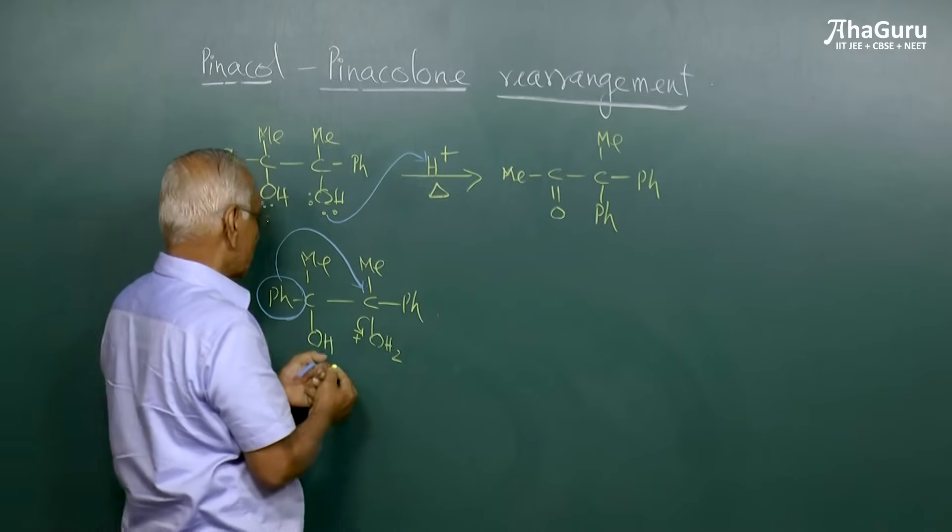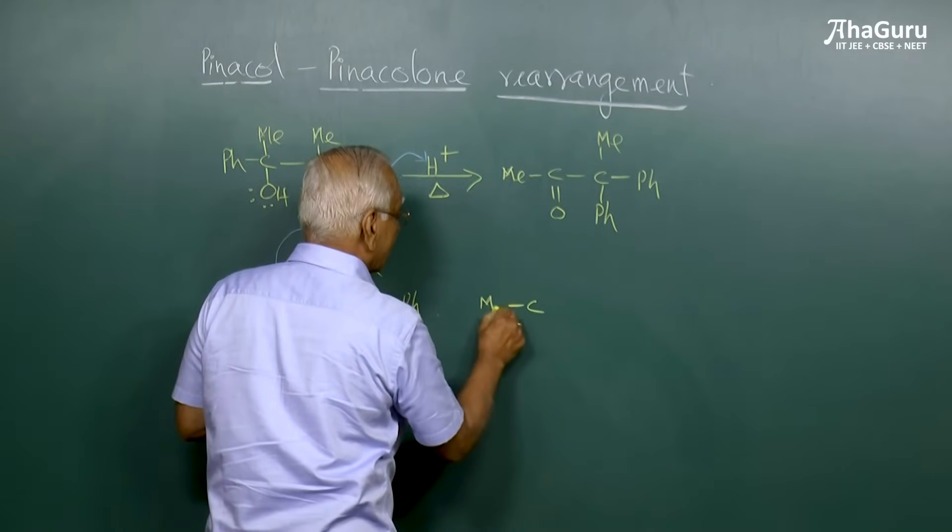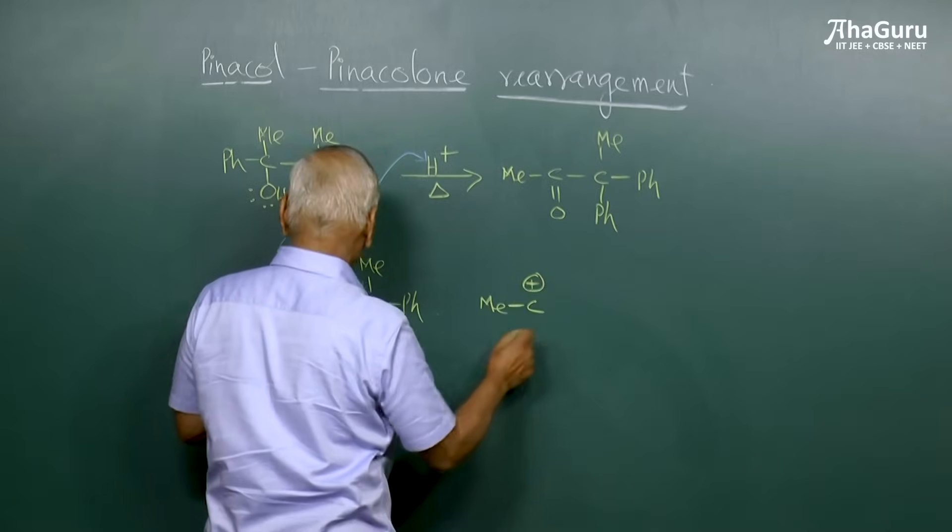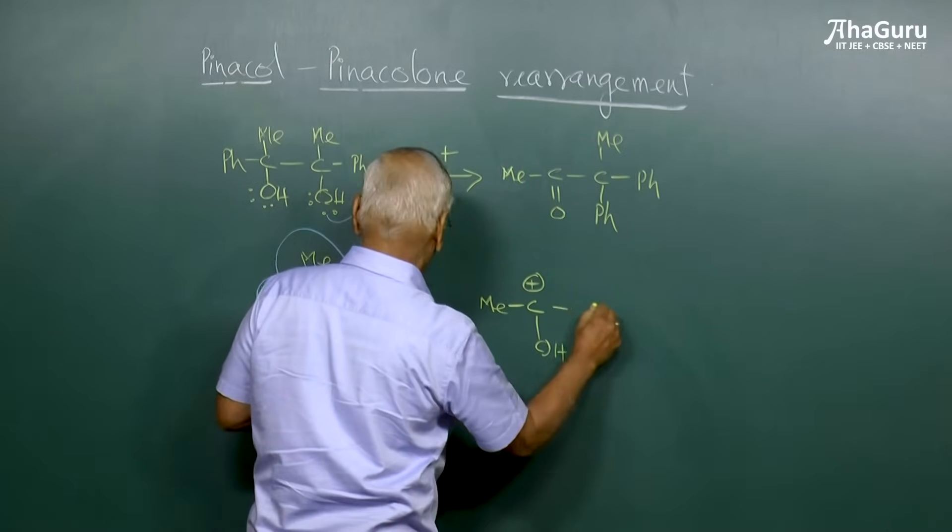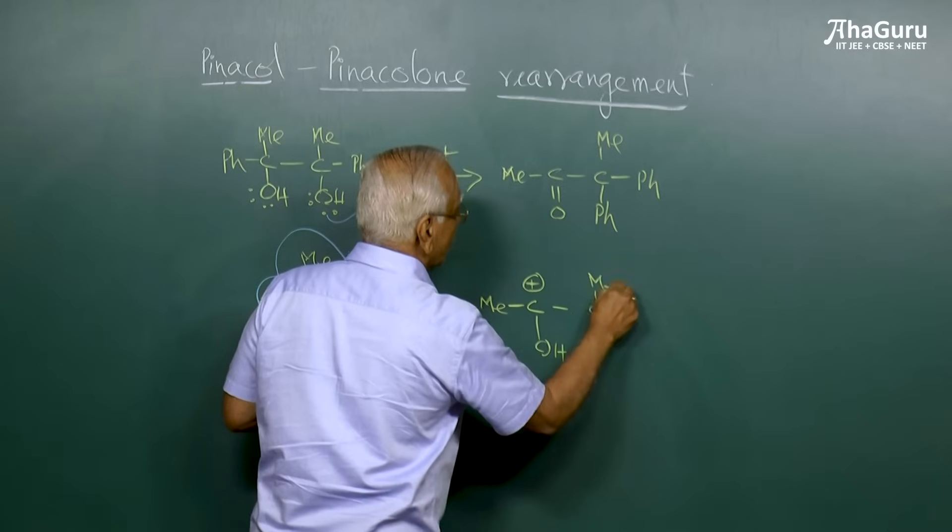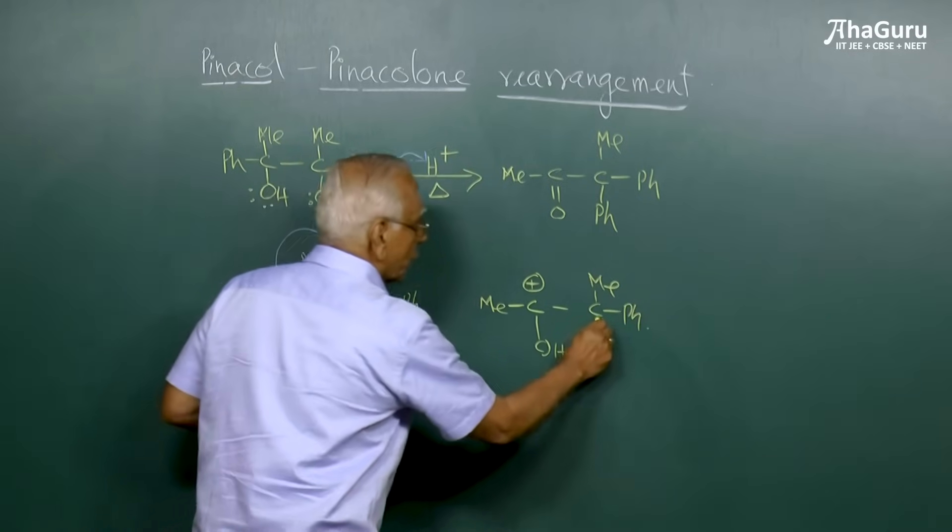So what should happen here? Because of this, the carbon atom gets a positive charge because the valency is not satisfied. You still have the OH group here and this has the methyl group and the phenyl group. So the phenyl group is attached here.